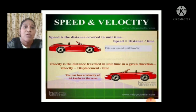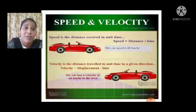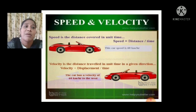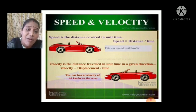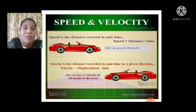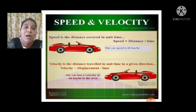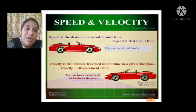If you look into the next picture, you can easily differentiate the concept of speed and velocity. Speed is the distance covered in unit time — formula: distance by time. For example, this car's speed is 60 kilometers per hour. But velocity is the distance traveled in unit time in a given direction — formula: displacement by time. The car has a velocity of 60 kilometers per hour to the west, meaning it is showing the direction. This picture differentiates the speed and velocity concepts easily.